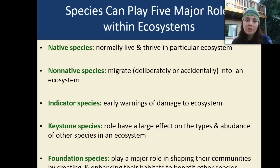Native species are species that normally live and thrive in a particular ecosystem. Non-native species are species that migrate into an ecosystem — sometimes it's deliberate, and sometimes they get there accidentally, like whenever they get carried from a boat that empties its ballast water from one area to the next.